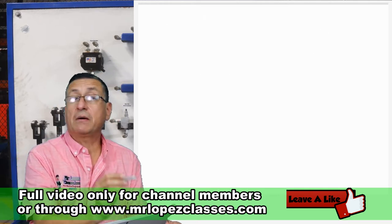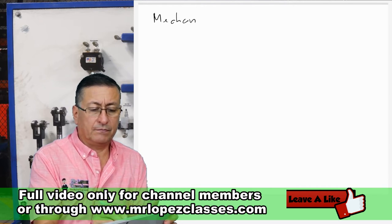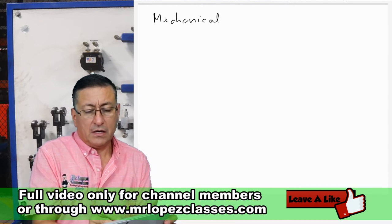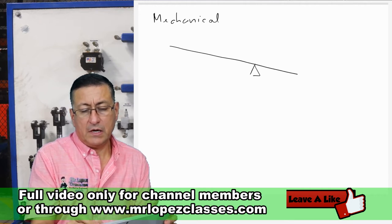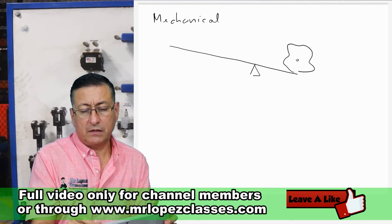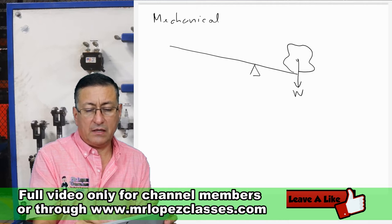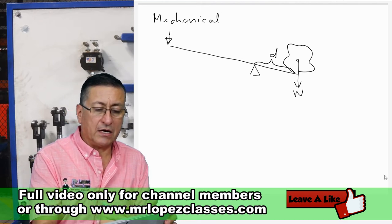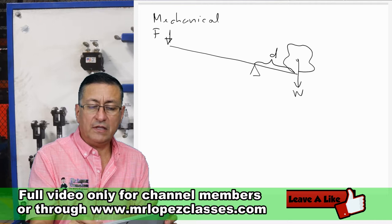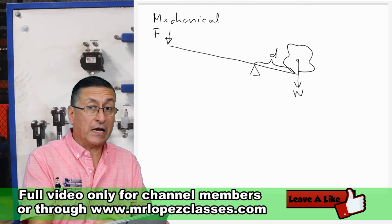For example, this is a mechanical system. Examples of mechanical systems. I have the fulcrum here, you remember? And I have a heavy weight over there. This is the weight. And this is the distance in between this and this. And this is the force that you need to apply here to lift that weight. What is the formula you remember? The second law of Newton?